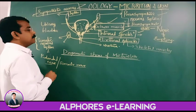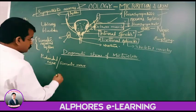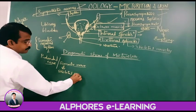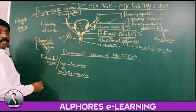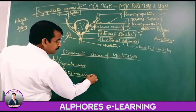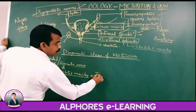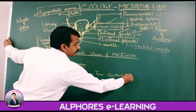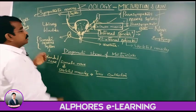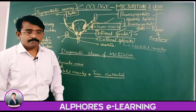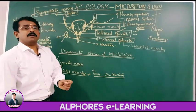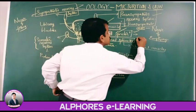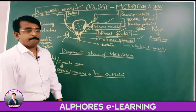Generally, the external sphincter is made up of skeletal muscles, and it is the result of the tonic contraction of skeletal muscle fibers that forms the external sphincter. Tonic contraction means sustained contraction which may last from a few minutes to a long time — it remains in a sustained contraction for a considerable number of hours, meaning it remains in a contracted state.